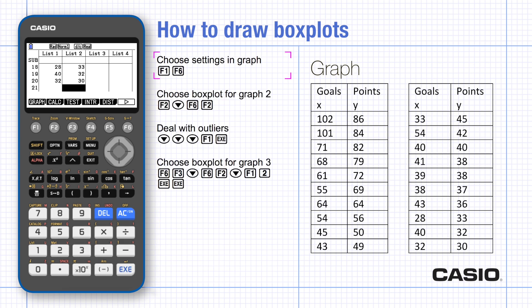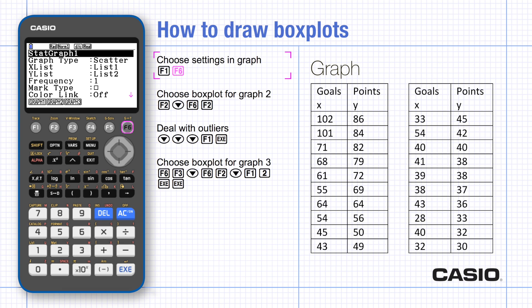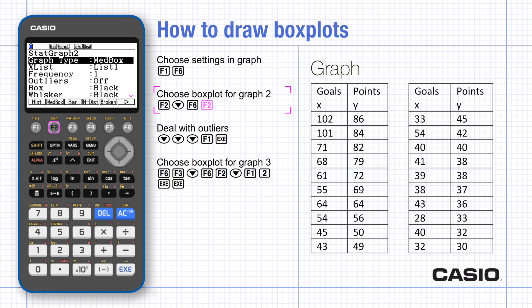To graph the data, choose graph. To specify the type of graph, go to set. Graph one defaults to a scatter diagram, so choose graph two and scroll down to change the graph type. Use the arrow to view the second page of choices and choose med box. To show outliers on the box plot, scroll down to outliers and switch to on, then execute to save.